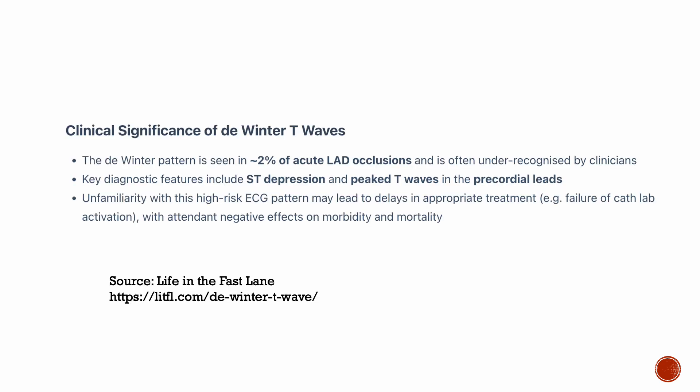The clinical significance of De Winter's T waves is that they are seen in about 2% of LAD occlusions, presenting with ST depression and peaked T waves in the precordial leads. So remember to look for these findings.